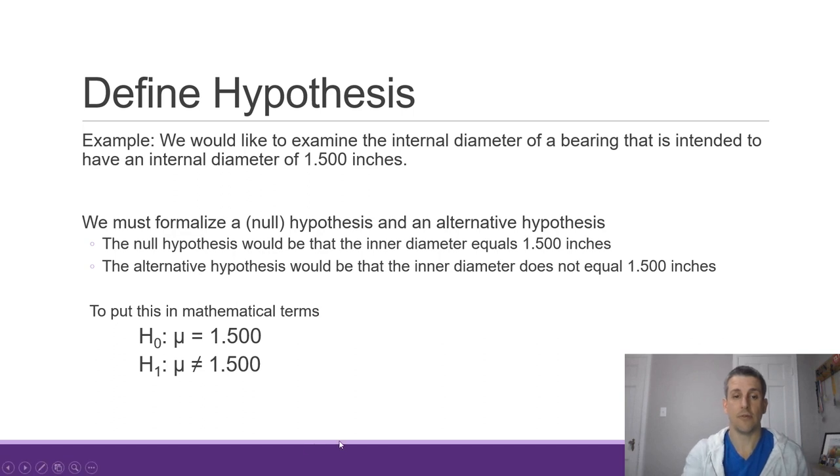Now, if we do that, we can put that in mathematical terms, which is shown here. So we have the null hypothesis, which is given by H sub 0, and we have mu, the mean, is equal to 1.5. And then our alternative hypothesis is mu is not equal to 1.5. So this is our mathematical formulation, and that's going to be the first step in all of our hypothesis testing to formalize the hypotheses.